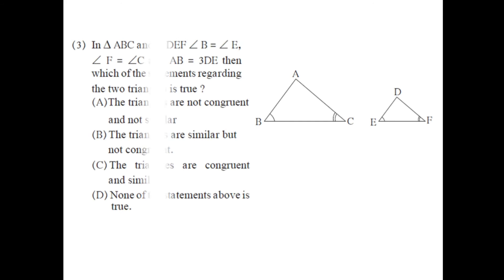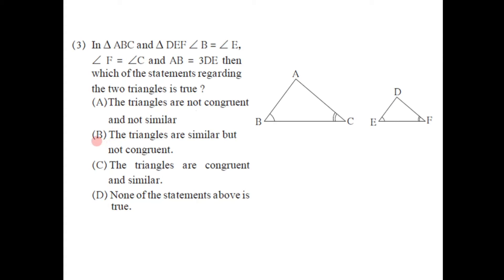The next question: two triangles are given, triangle ABC and triangle DEF. In triangle ABC and triangle DEF, angle B = angle E, angle F is congruent to angle C, and AB = DE. We have to determine which statement regarding the two triangles is true. Since angle B is congruent to angle E and angle C is congruent to angle F, by the AA test these two triangles are similar — triangle ABC is similar to triangle DEF.